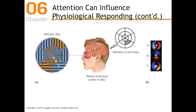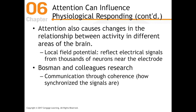We're picking right back up on where we left off in the last video, talking about how attention can influence physiological responding. The example I used was one with a human and an fMRI. Now I'm going to give you another example using a Bosman's experiment where they actually used monkeys.